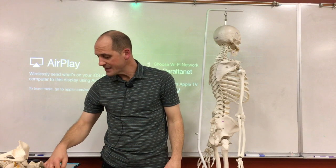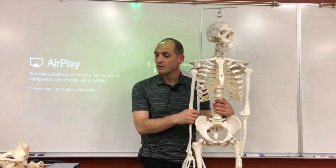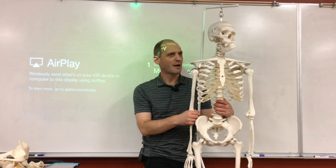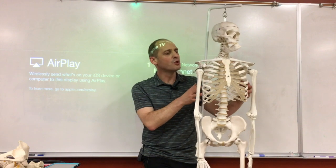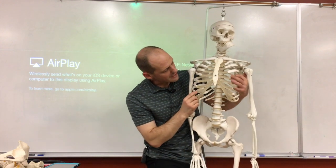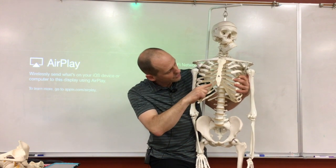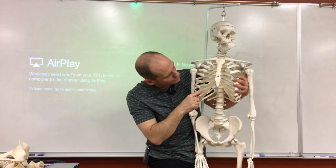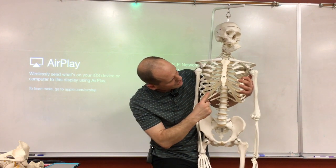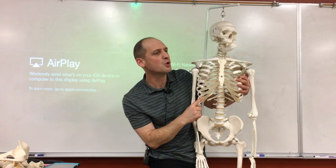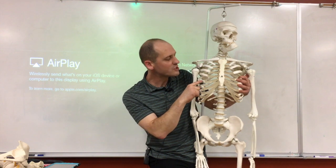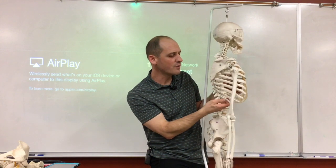Then the last ones: we have ribs that are true ribs, false ribs, and floating ribs. The true ribs attach directly via their own cartilage straight to the sternum. After that, down lower, that cartilage needs to go into another cartilage first and then to the sternum — we call them false ribs. So true versus false means: is the rib directly through its own cartilage going to the sternum or not? The last two ribs are floating ribs — they don't have any cartilage connections at all.